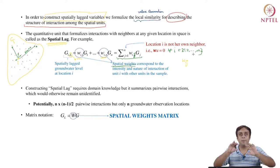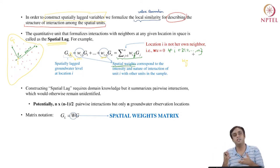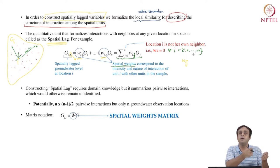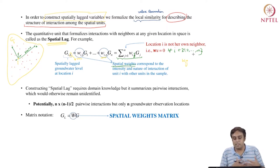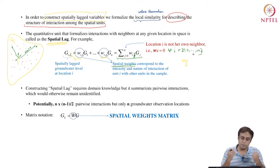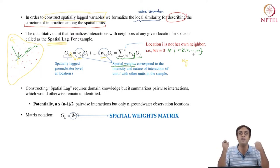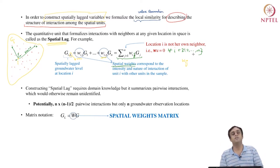Constructing spatial lags requires domain knowledge, but it summarizes pairwise interactions that would otherwise remain unidentified. The spatial lag characterizes pairwise interaction — how i and j interact is summarized by the spatial lag. What value should w_{ij} carry? Should it be binary 0 or 1? Should nearer values get larger weights? Just because two points are equidistant to location i, will they have the same spillover effect? These are matters of complexity, which is why domain knowledge is essential.